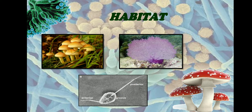Many fungi grow on foods such as bread, jam, pickles, fruits, and vegetables. Fungi prefer to grow in dark and dim light, and they love moist environments. Wherever the environment is moist, we get to see fungi growing — so fungi grows in moist habitats.